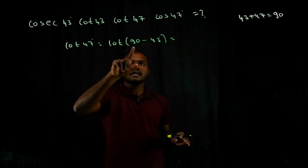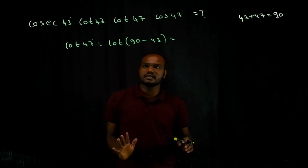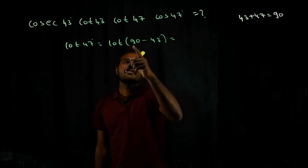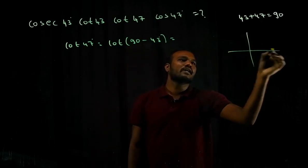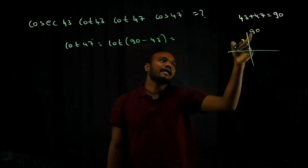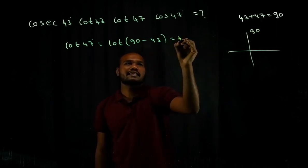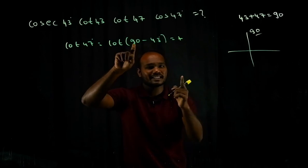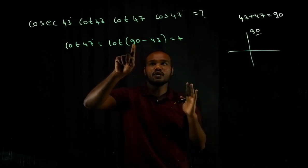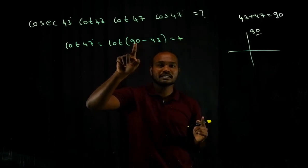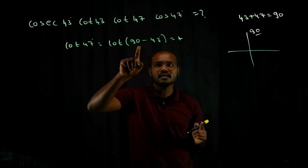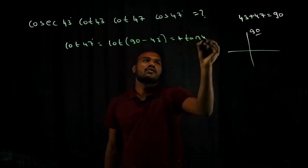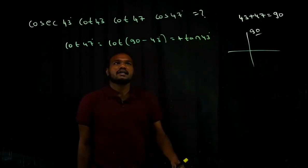cot(90° − θ) is in the first quadrant — positive — and complementary, so cot converts to tan. So cot 47° = tan 43°. Similarly, cos 47° = cos(90° − 43°), and cos(90° − θ) in the first quadrant with complementary angle converts to sine, so cos 47° = sin 43°.